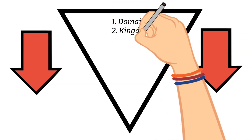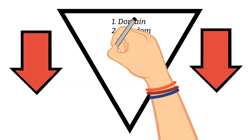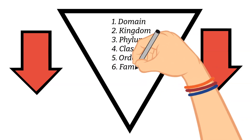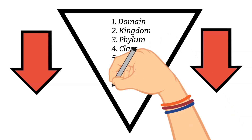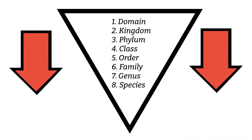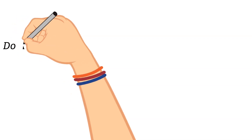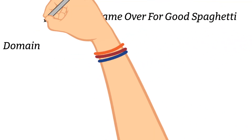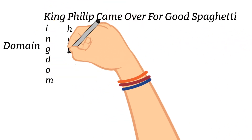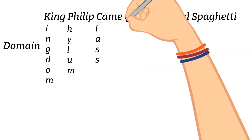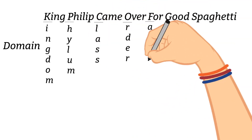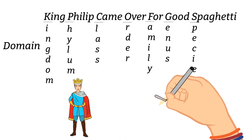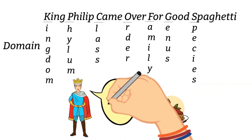There are eight major levels of classification. It goes: domain, kingdom, phylum, class, order, family, genus, and species. To help remember this, domain comes first, and then the rest can be remembered with the acronym: King Philip Came Over For Good Spaghetti. Each word's first letter corresponds to the first letter in the classification system.